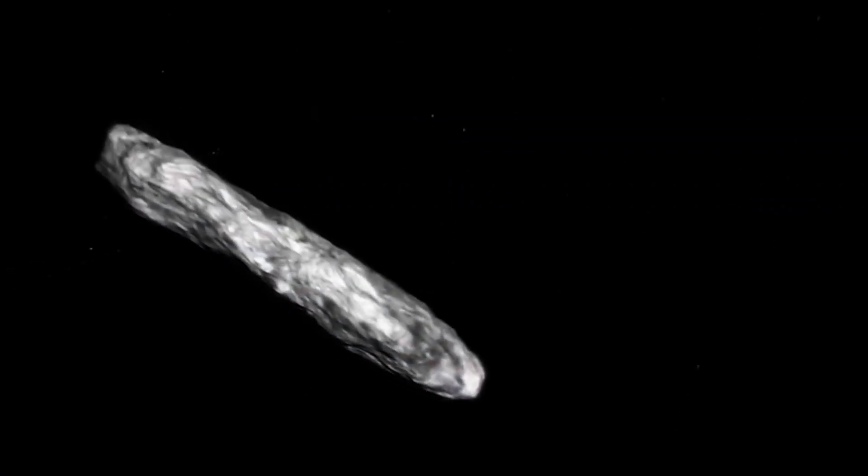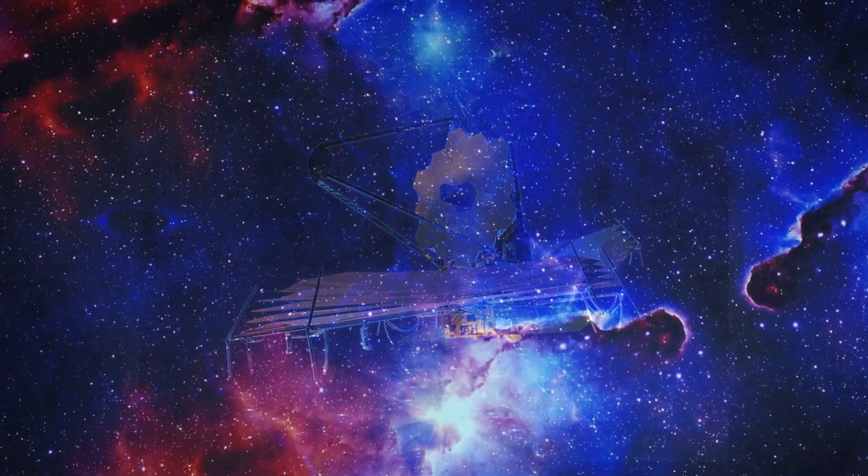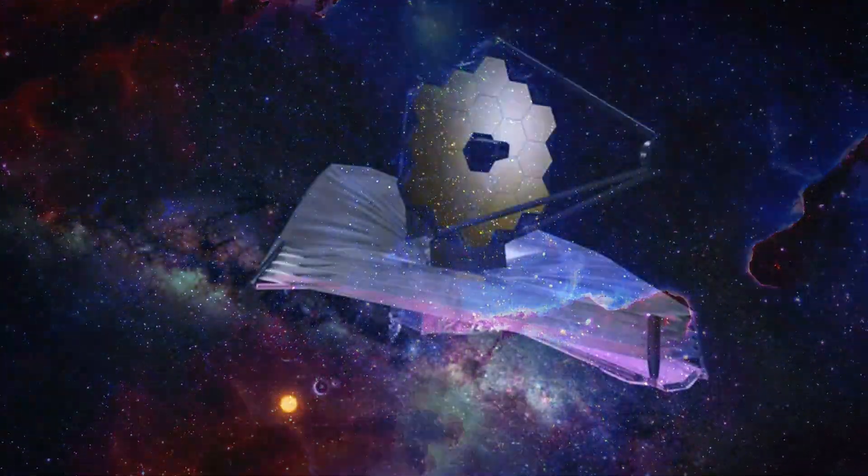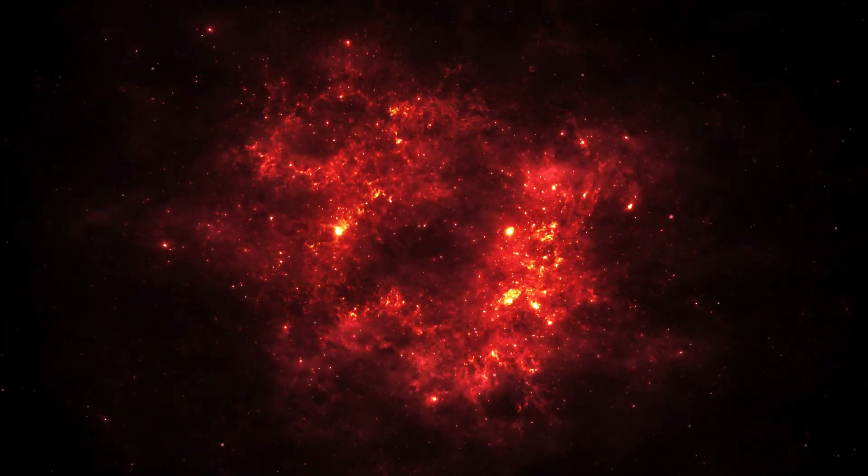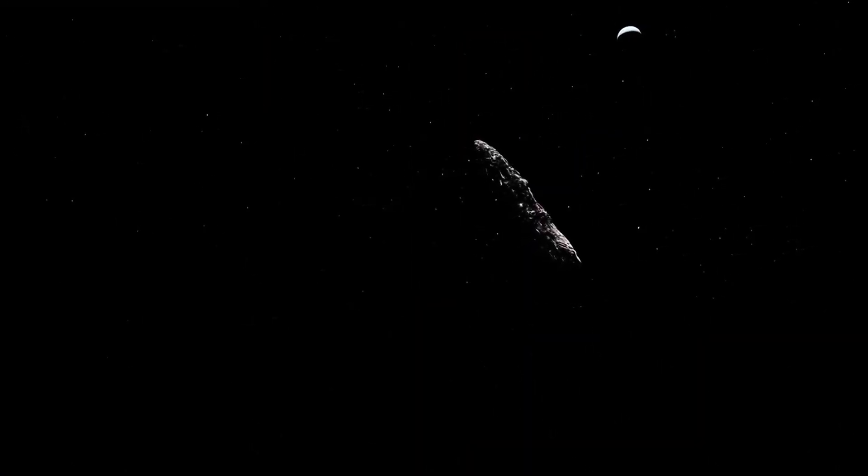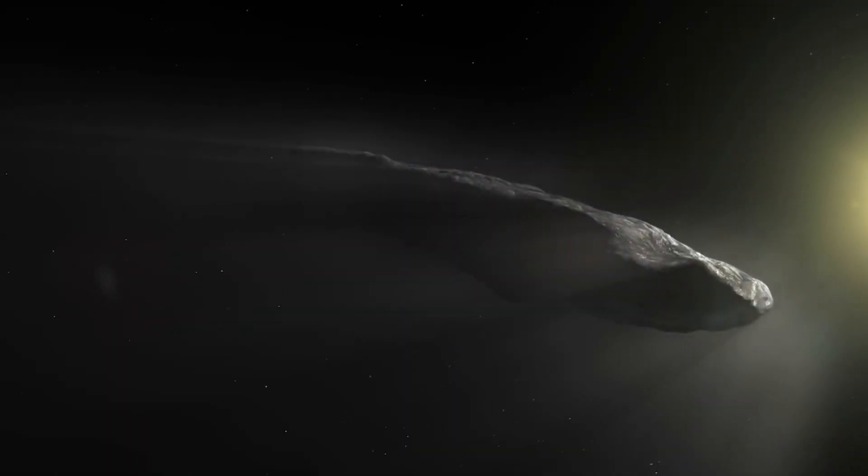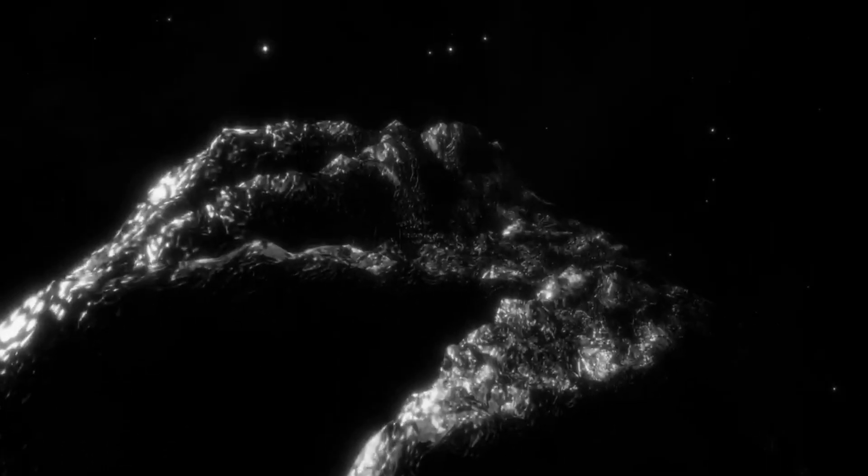As the most advanced observatory ever created, Webb was designed to uncover the universe's greatest secrets. Its infrared technology allowed it to probe distant reaches of space and examine objects with unmatched precision. When Webb turned its gaze on Oumuamua, it captured the first-ever real image of the object, unveiling details that had never been seen before.